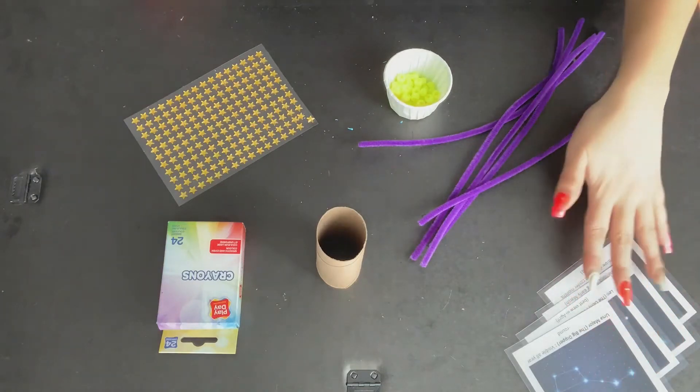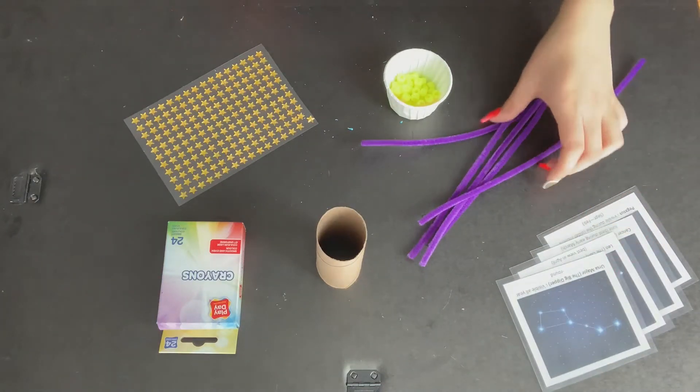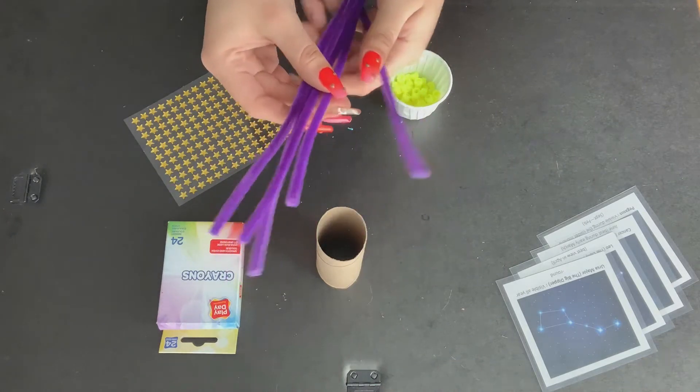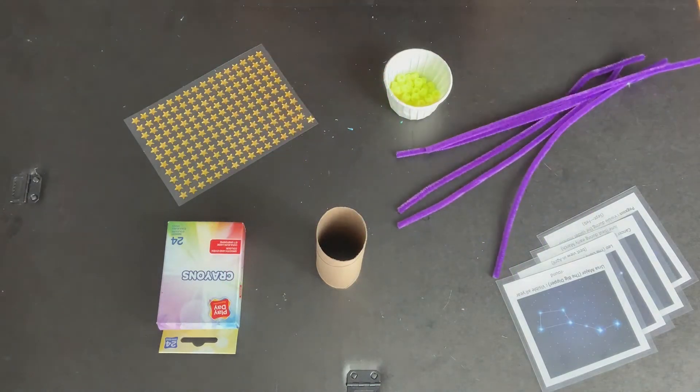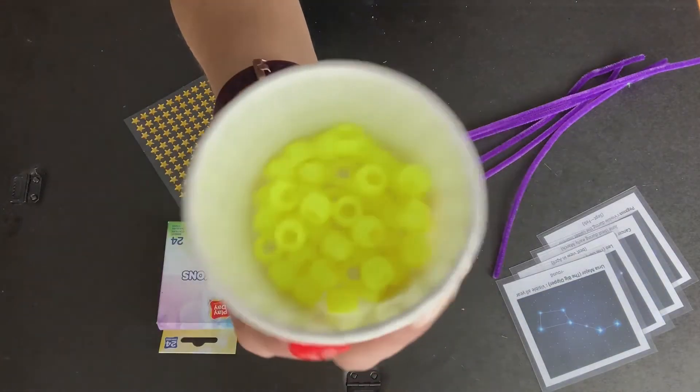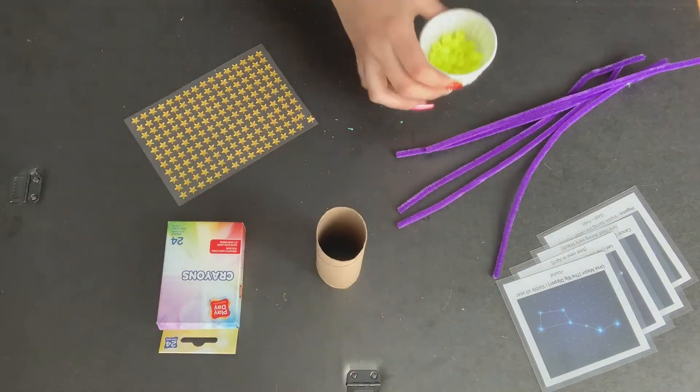These cards are going to help when recreating these constellations with the five pipe cleaners that you will also receive, as well as pony beads that are going to be used to represent the stars of your constellations.